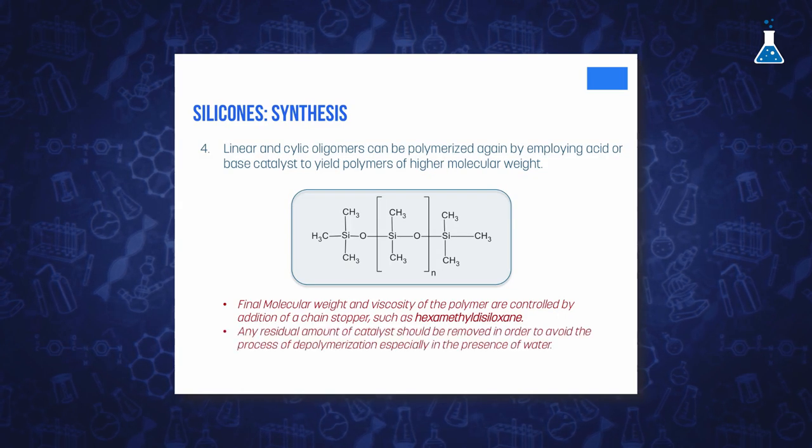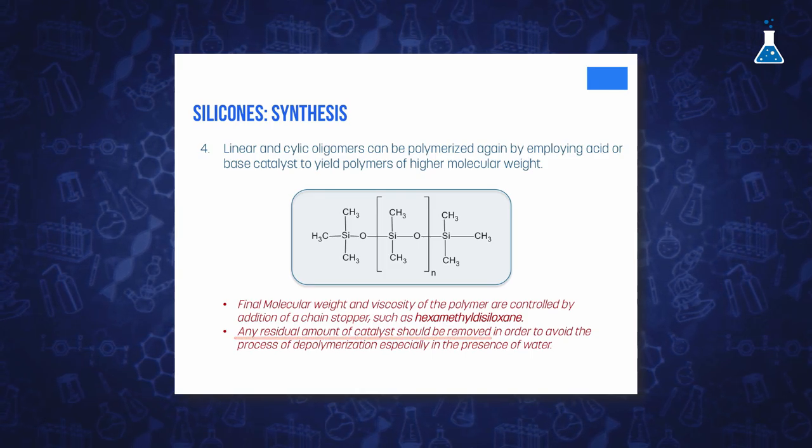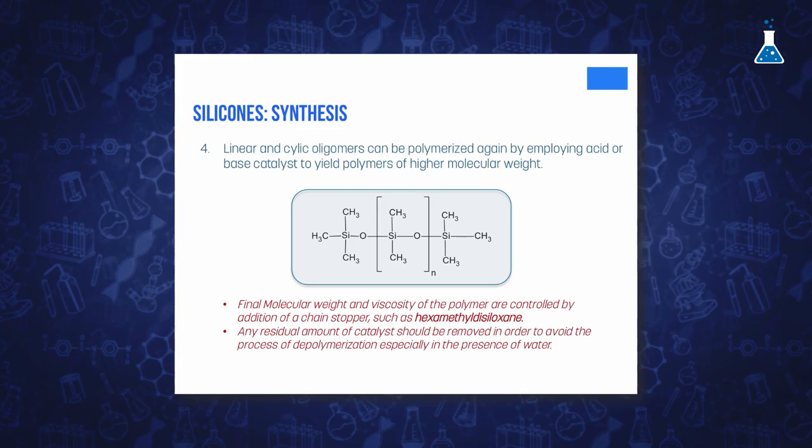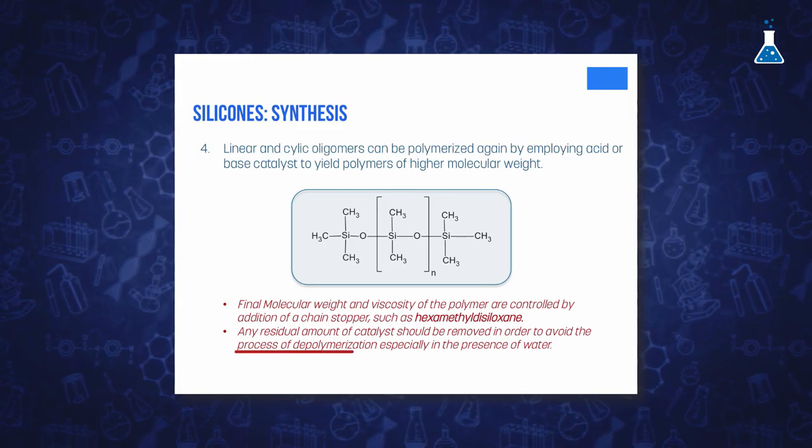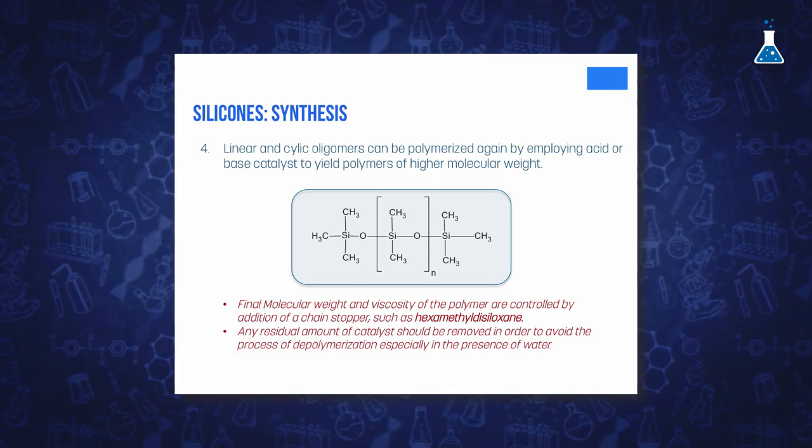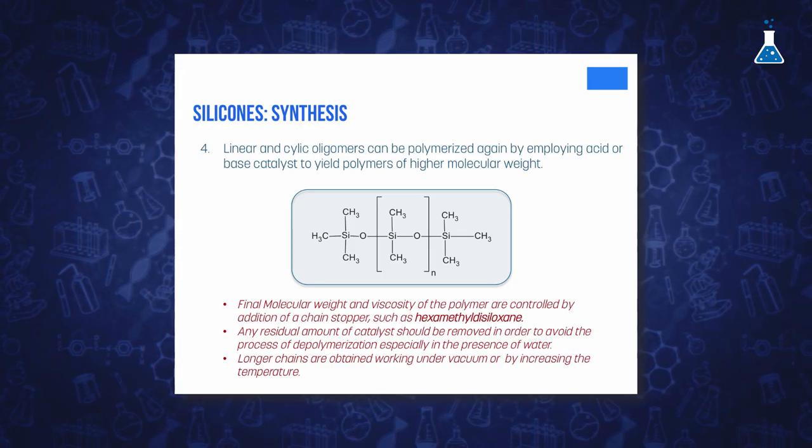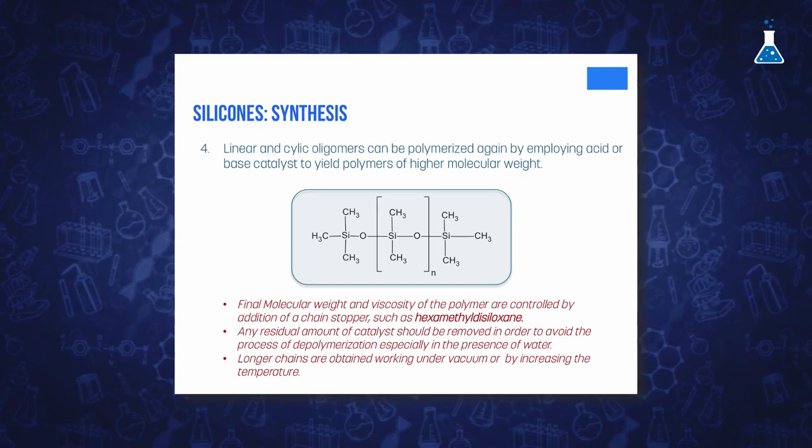After removing the remaining cyclics under vacuum and high temperature, we obtain silicone oil consisting of a mixture of long and short polydimethylsiloxanes. It is important to remember for this process the importance of removing any residual catalysts, because most catalysts employed in the polymerization of silicones also catalyze the process of depolymerization, especially in the presence of water at elevated temperature. Therefore, longer chains are obtained when working under vacuum and by increasing the temperature in order to remove any residual water.